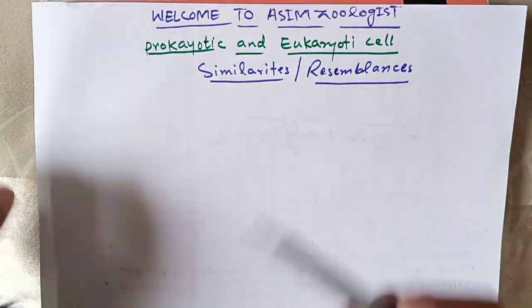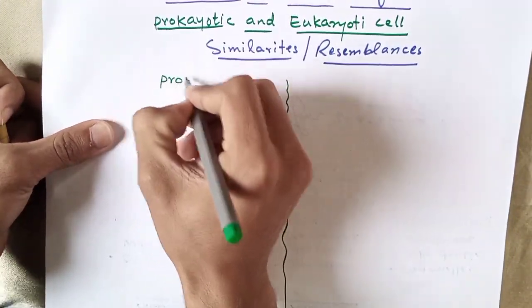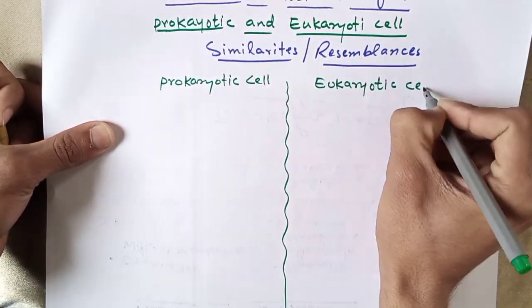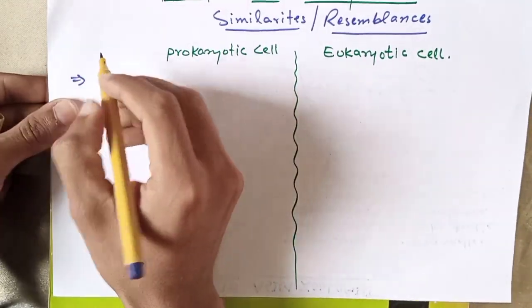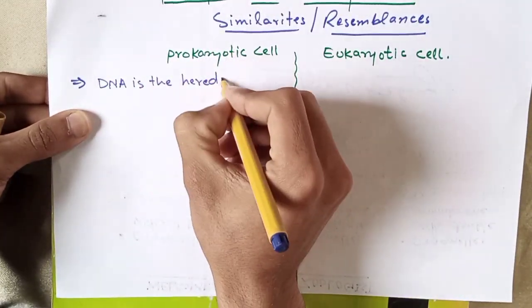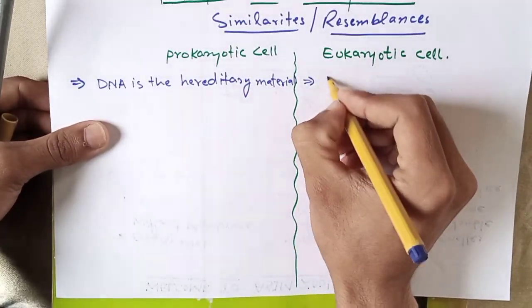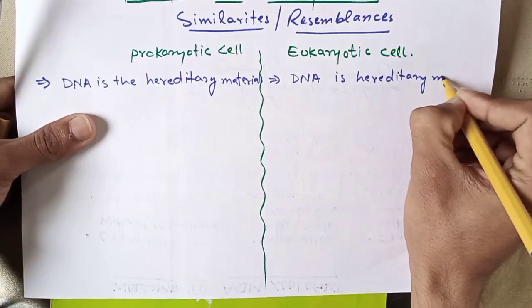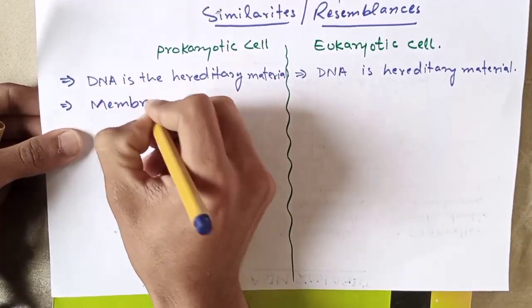The first similarity is that in prokaryotic cells, DNA is the hereditary material, and in eukaryotic cells also, DNA is the hereditary material.